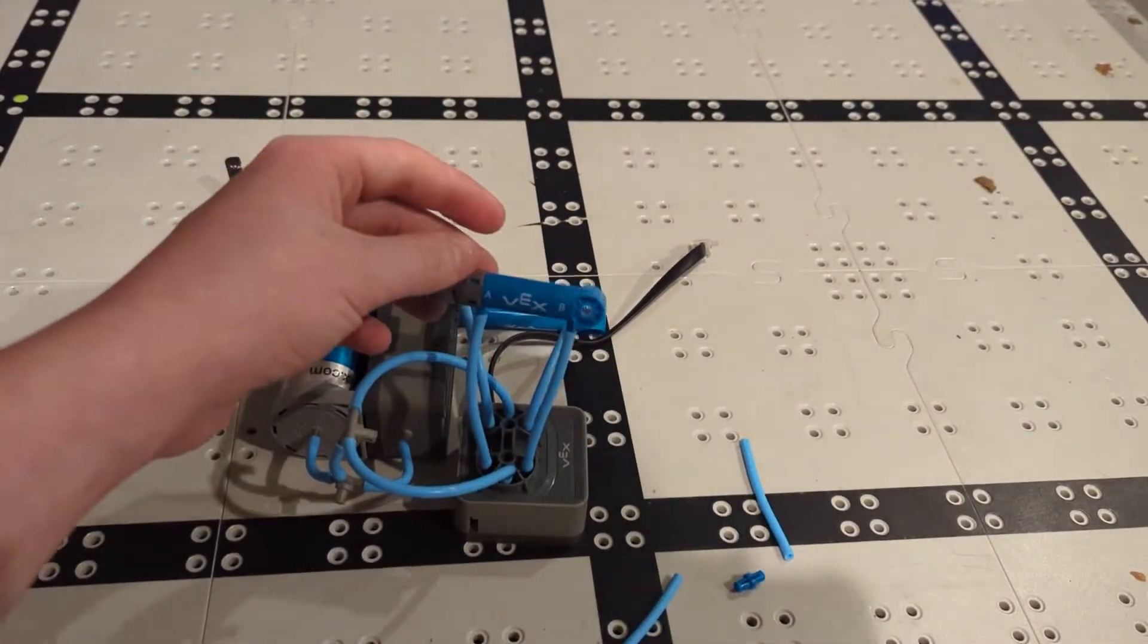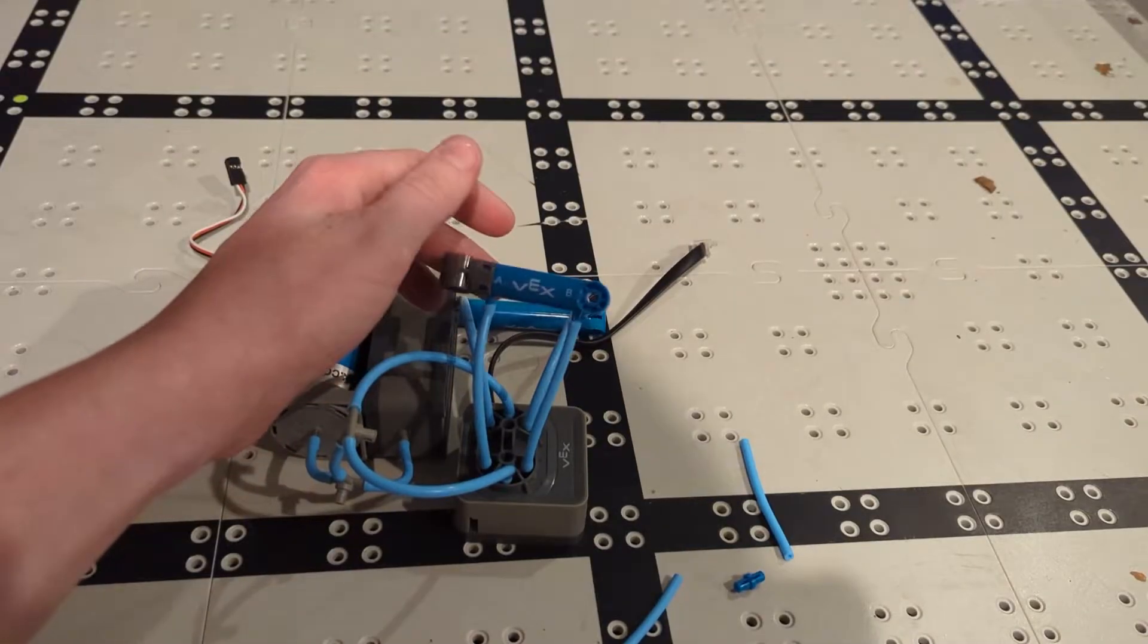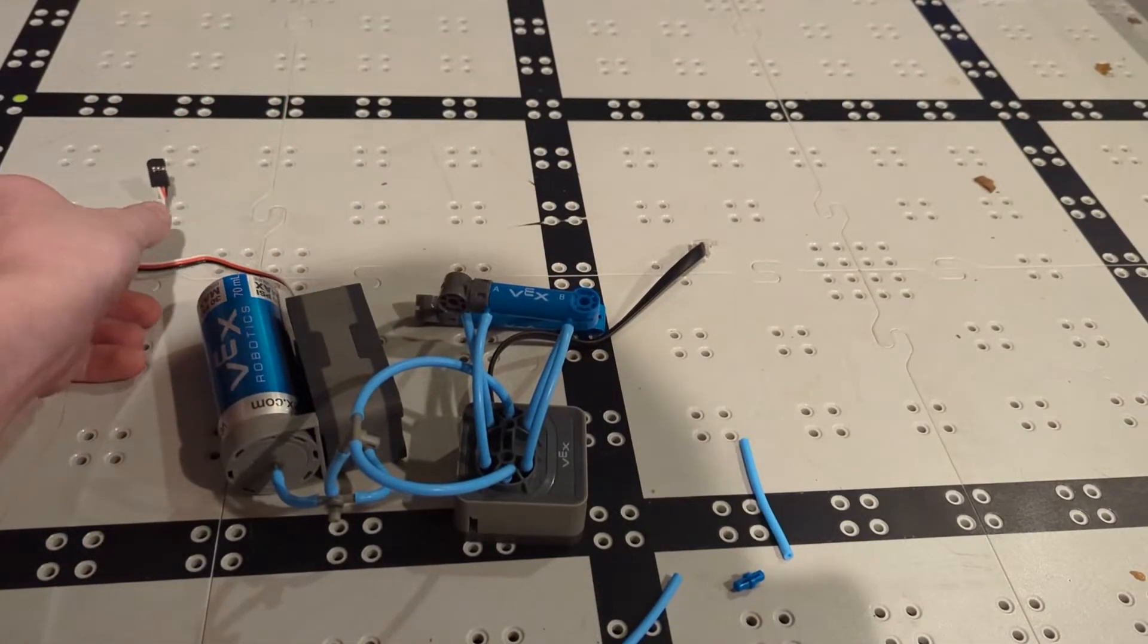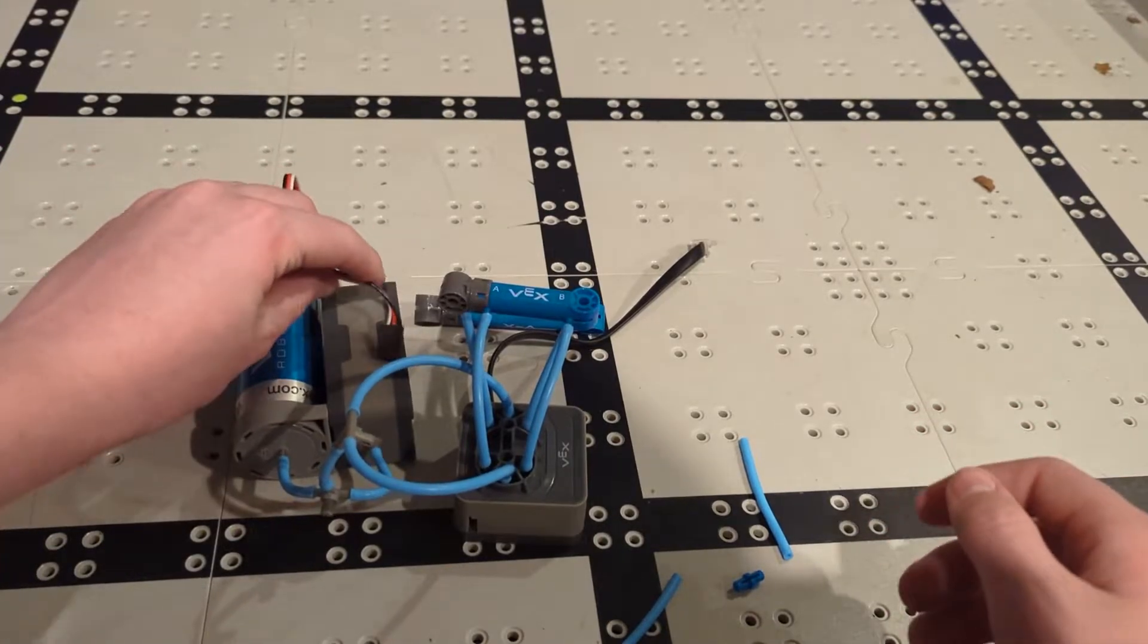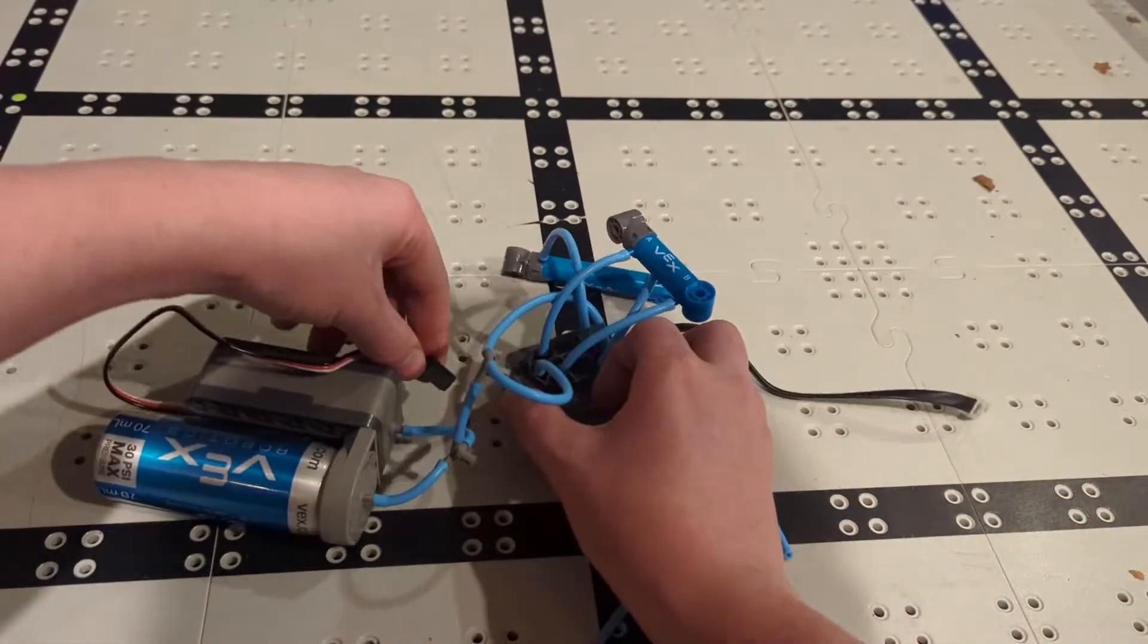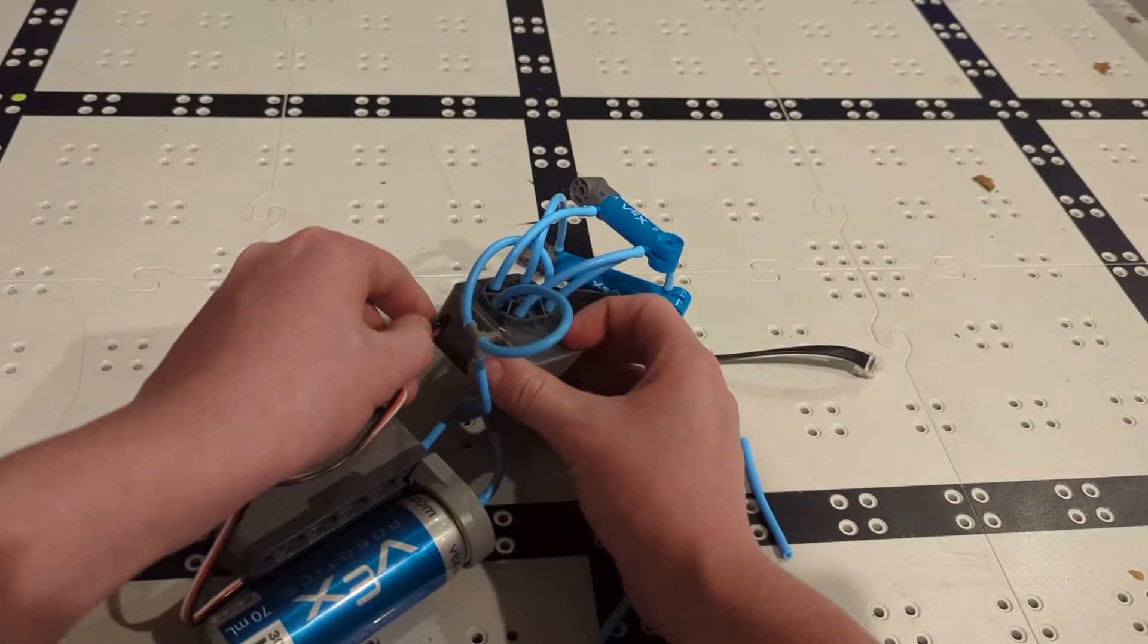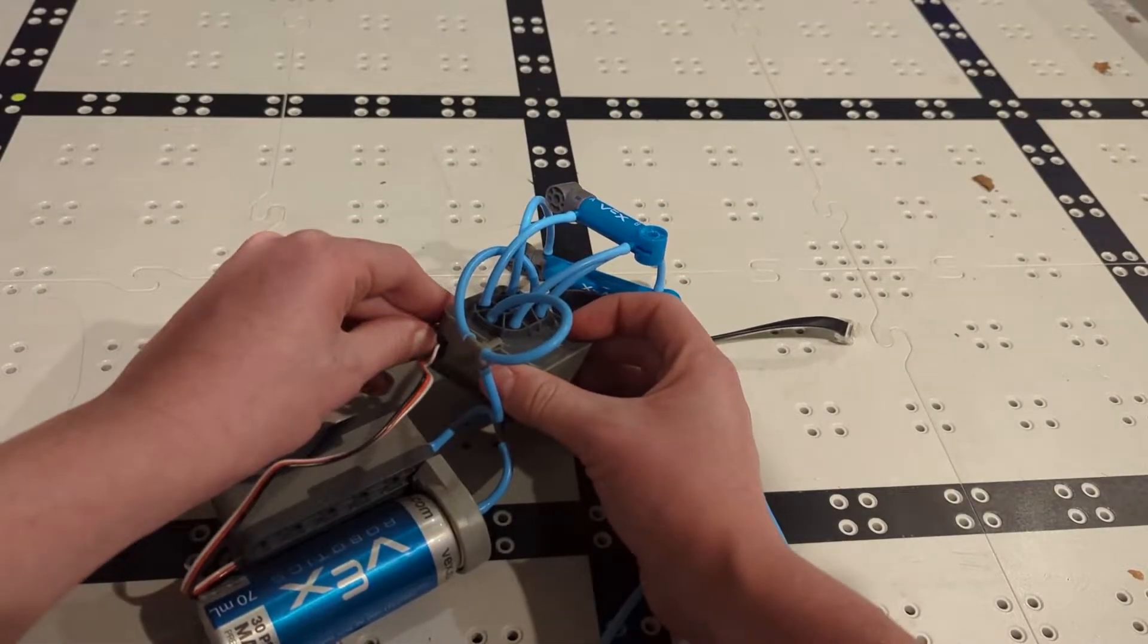All right, so we got this second one attached now. We just did the same thing as the first one. And one thing we forgot to do was there's this little cable that comes out of the pump. And we need to plug that in to the solenoid.